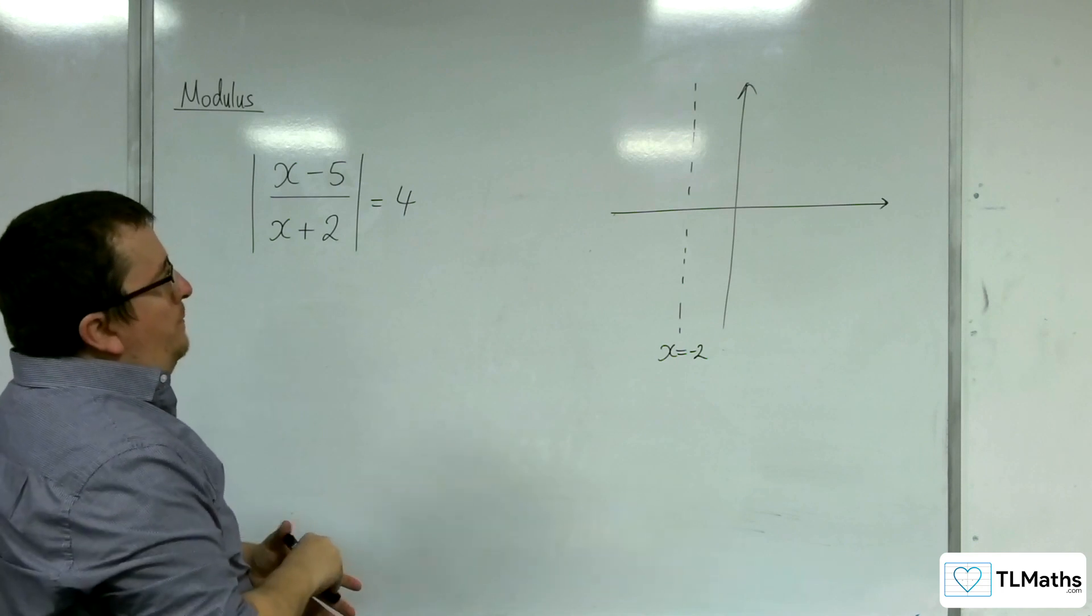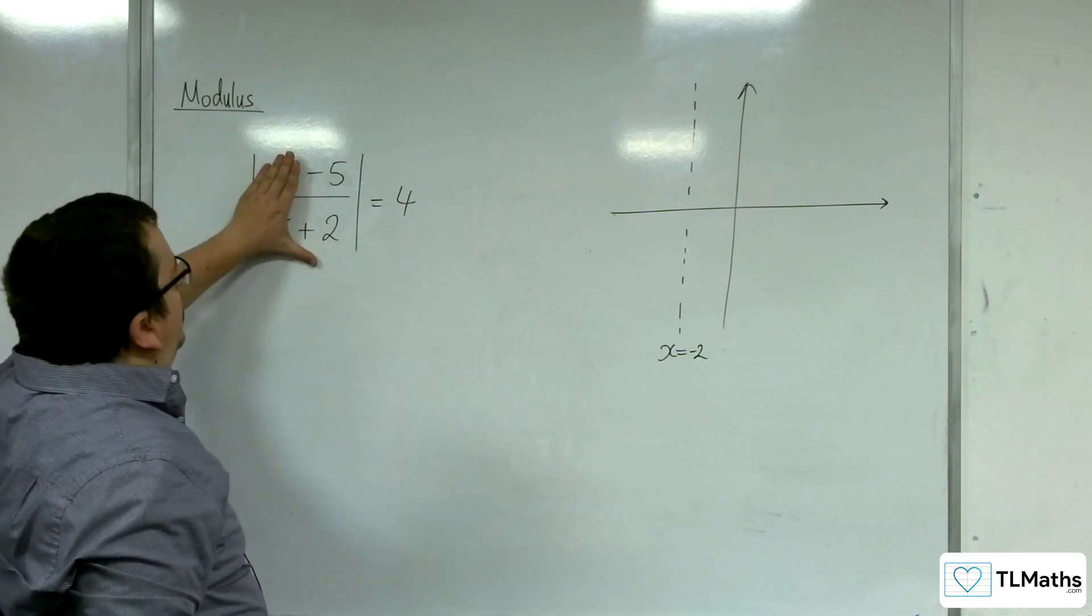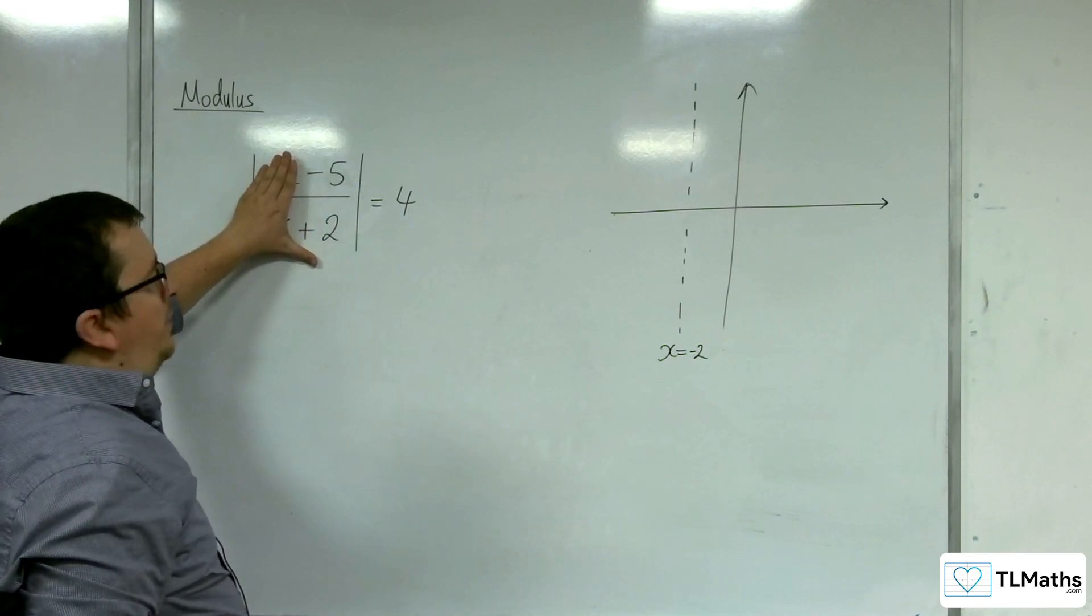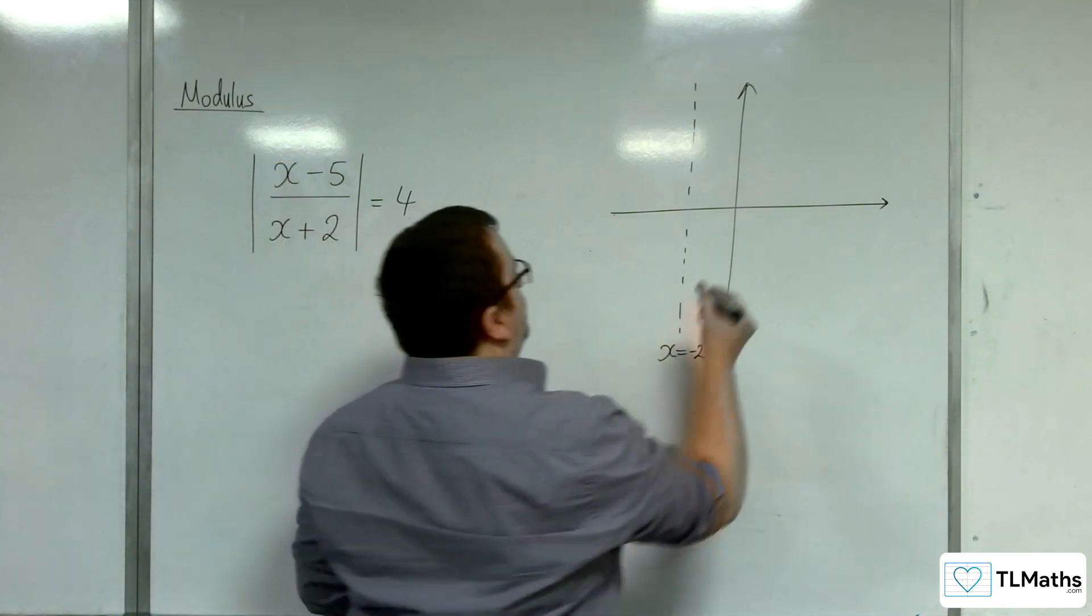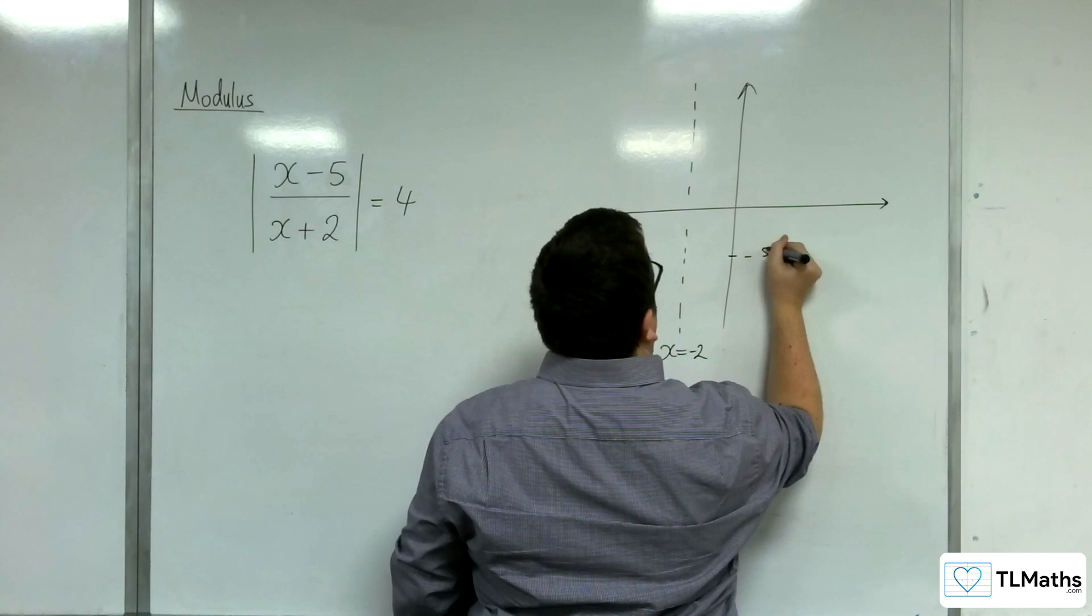When x is 0, we're going to get minus 5 over positive 2, so minus 5 halves. That's where we're crossing the y-axis.